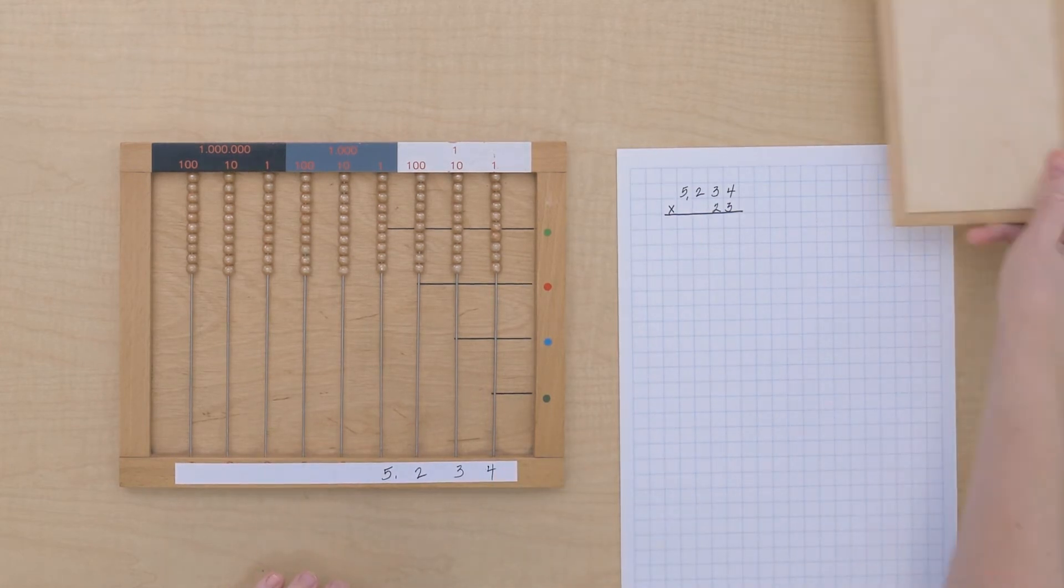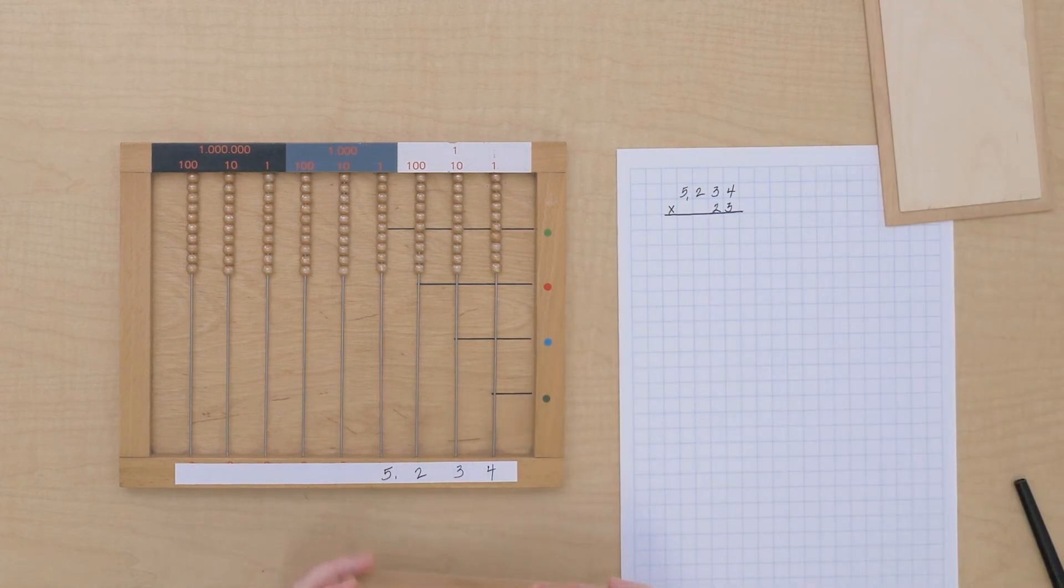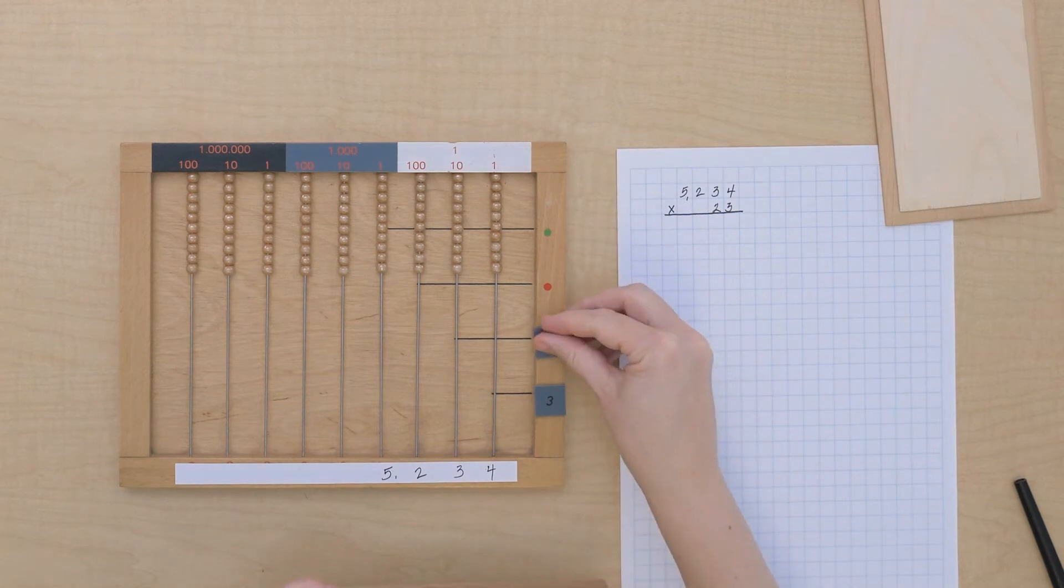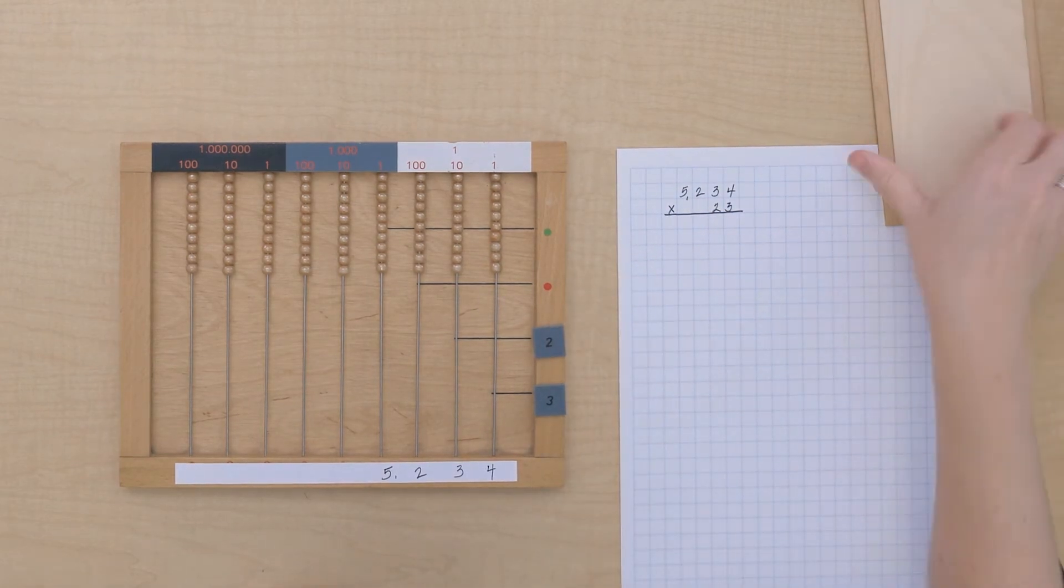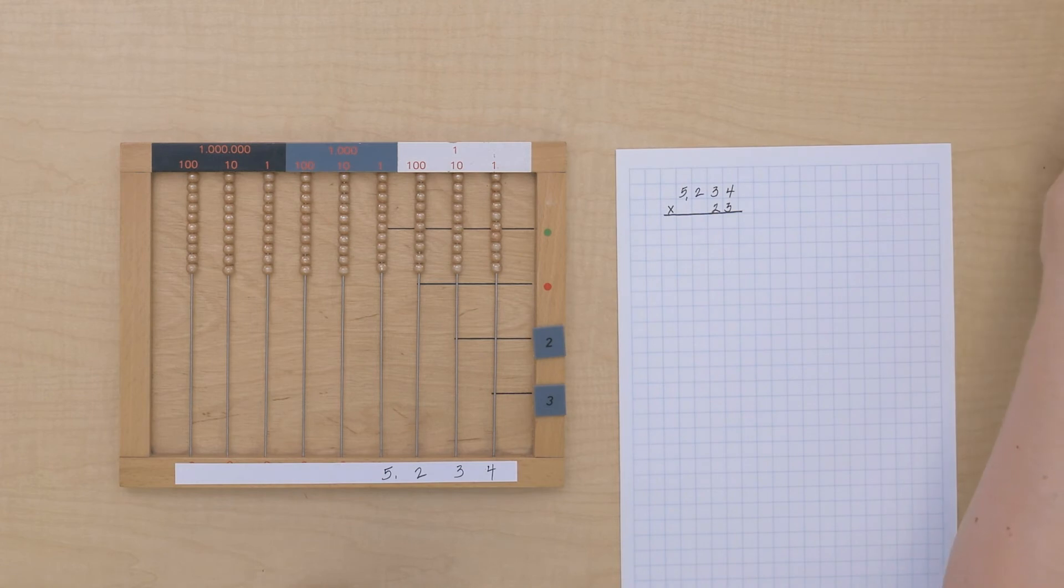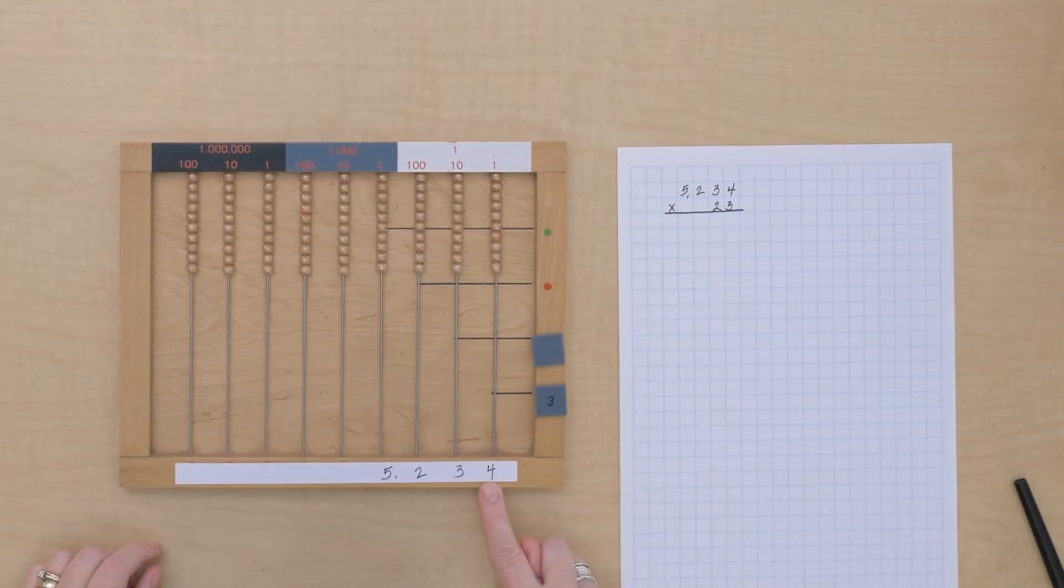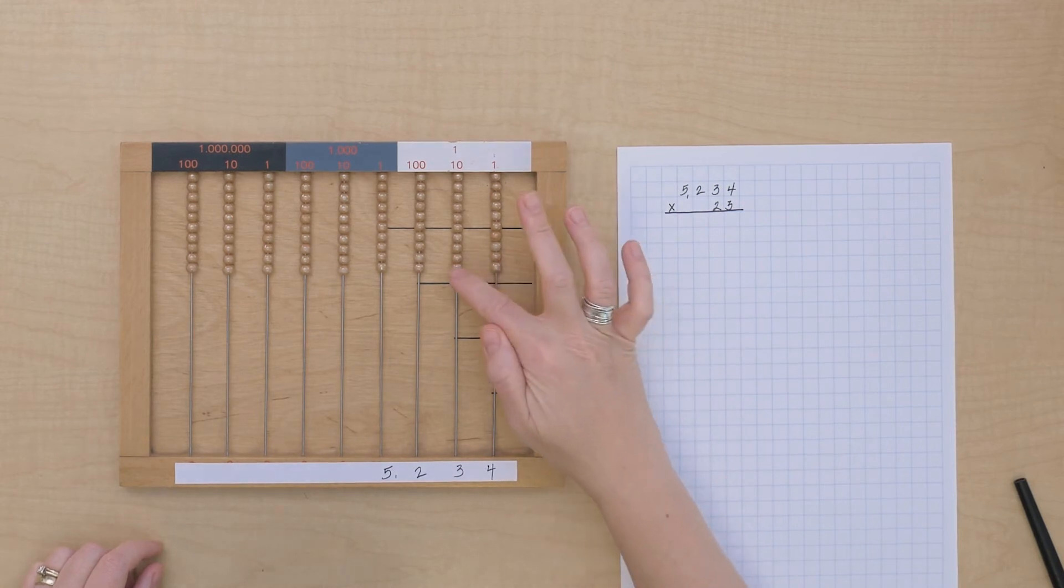And then we're multiplying by 23. All right, so let's get some gray numbers here. We start with our units multiplication. Units times units: 4 times 3 is 12. So I'm going to make 12 on my bead frame. See, I have 12.